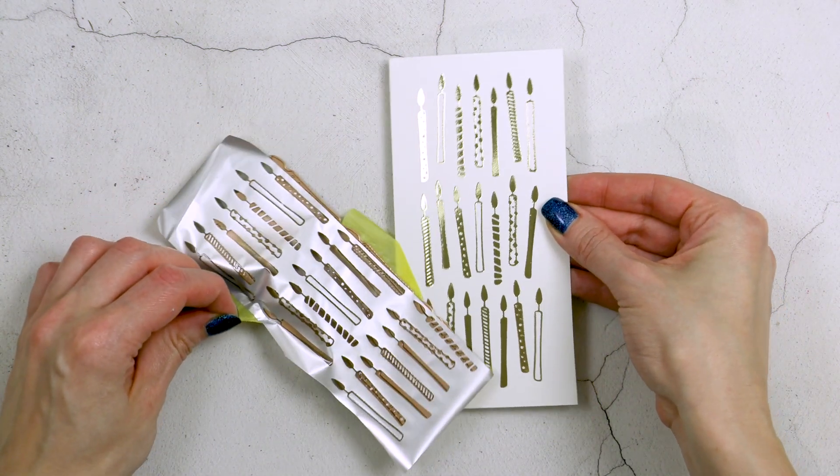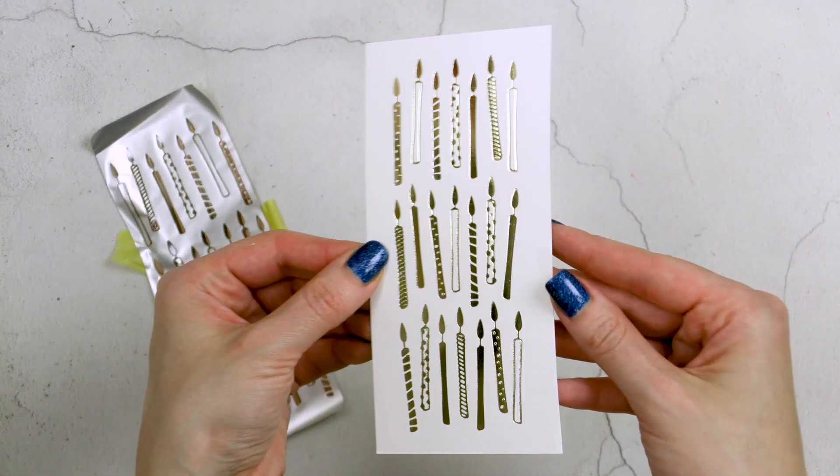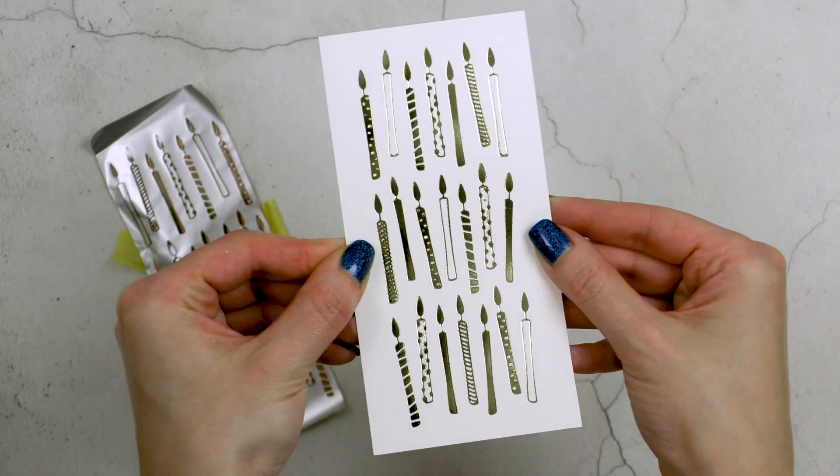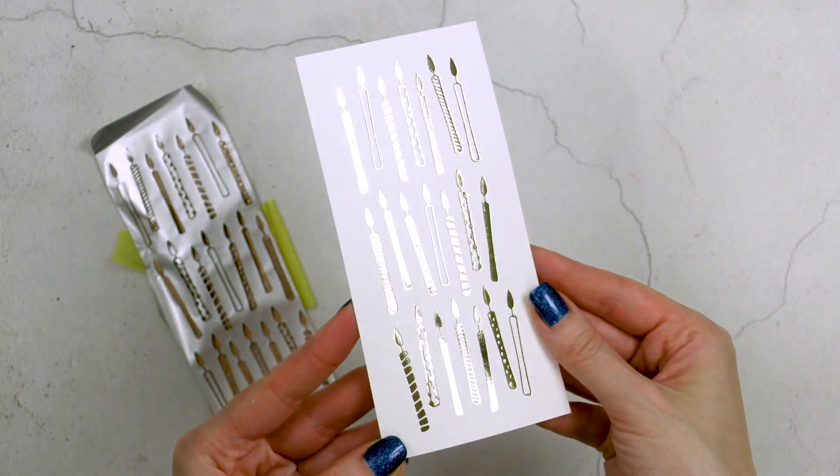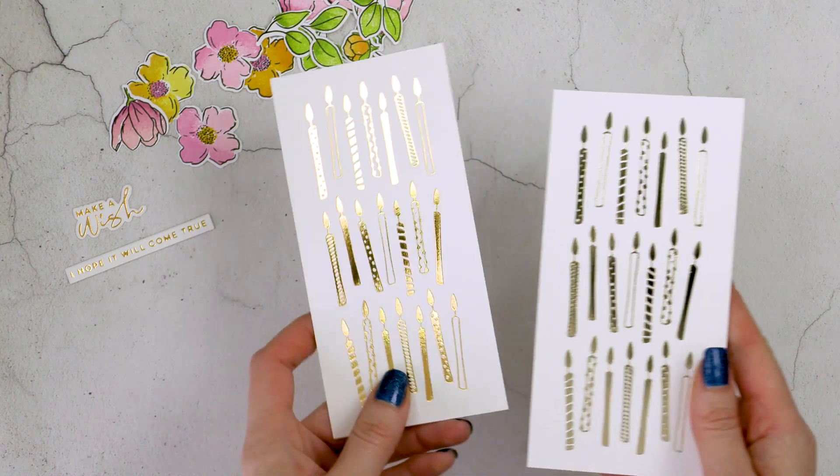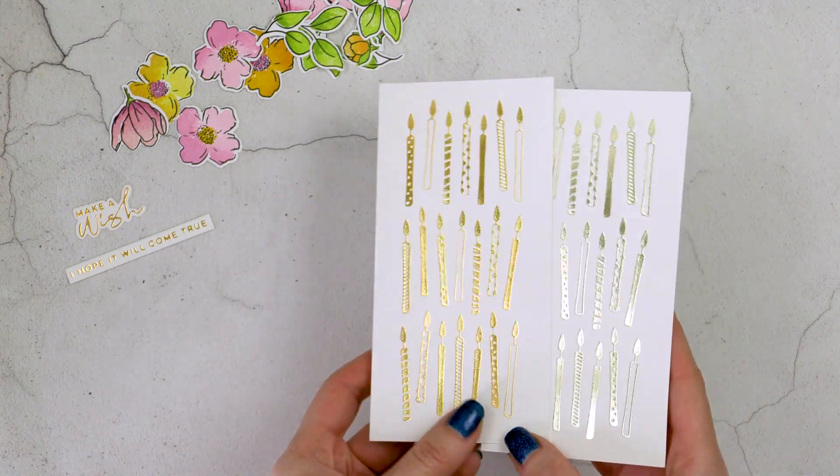So here's one of the panels that I foiled this was foiled in a different color foil this is champagne and then I foiled another panel in that same polished brass and you can see these two side by side and you can see how well the foiling turned out.